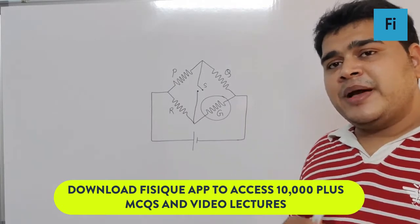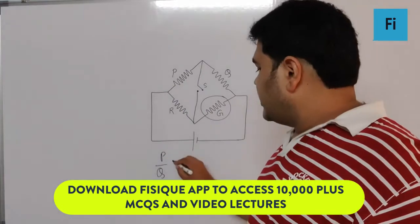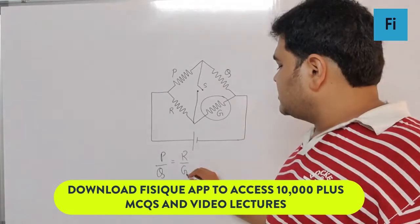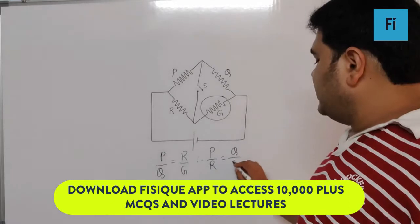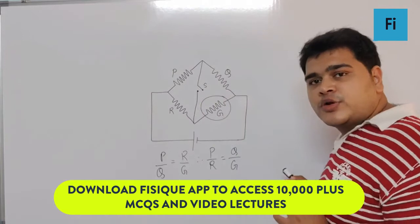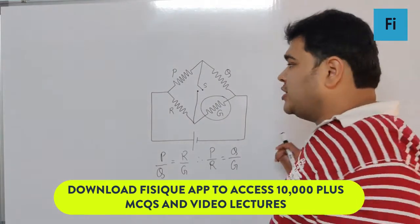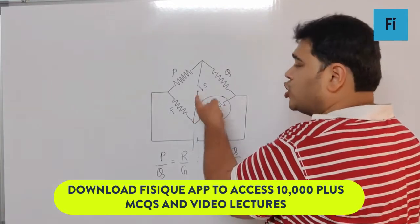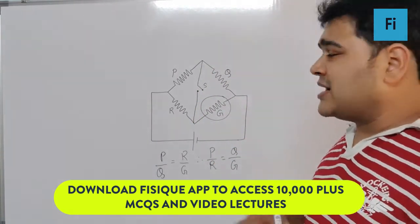The relation P/Q = R/G can also be written as P/R = Q/G, which is the balance condition for the Wheatstone network. In this condition, whether you connect the switch or not doesn't matter because current will never flow through this part.